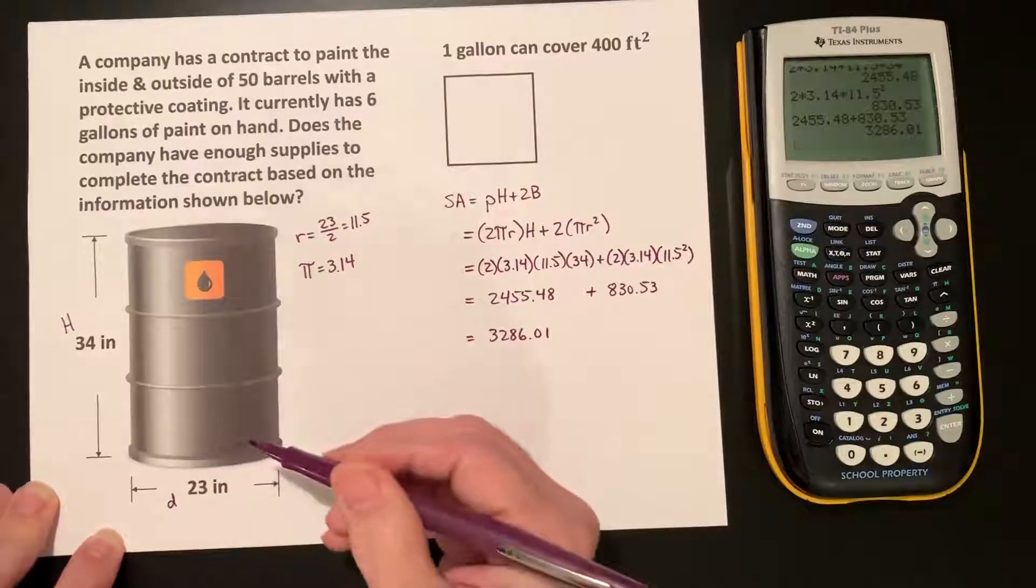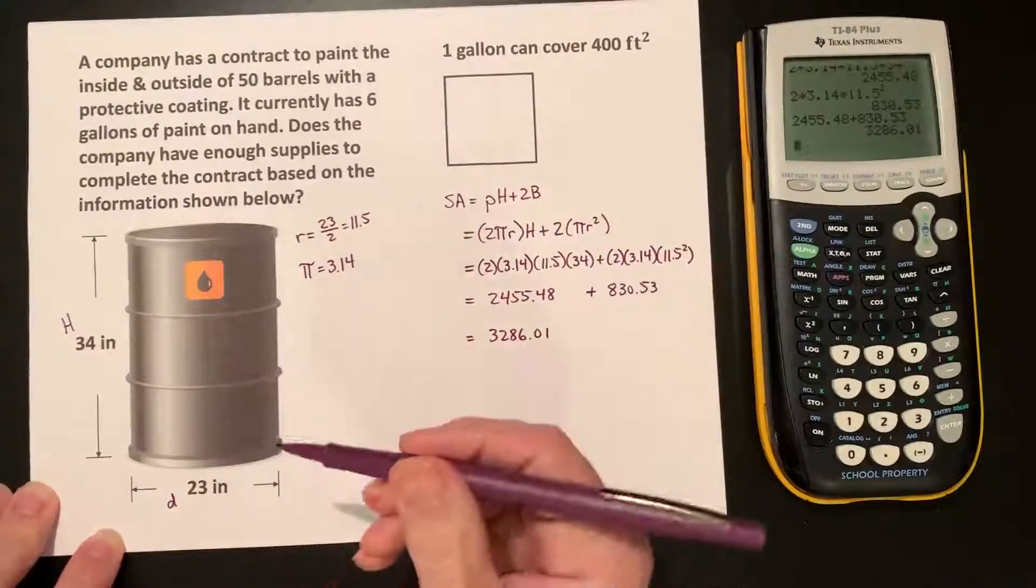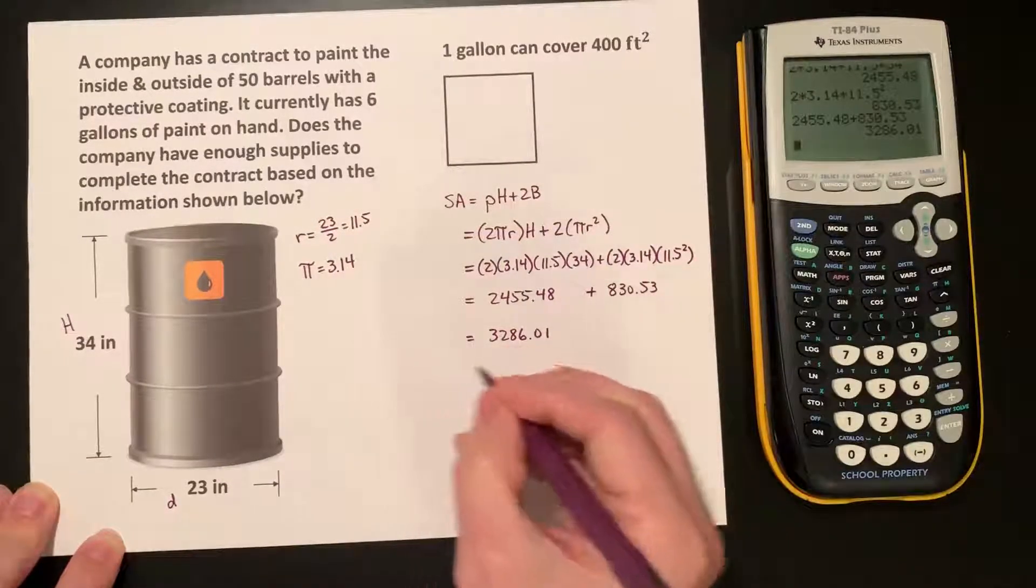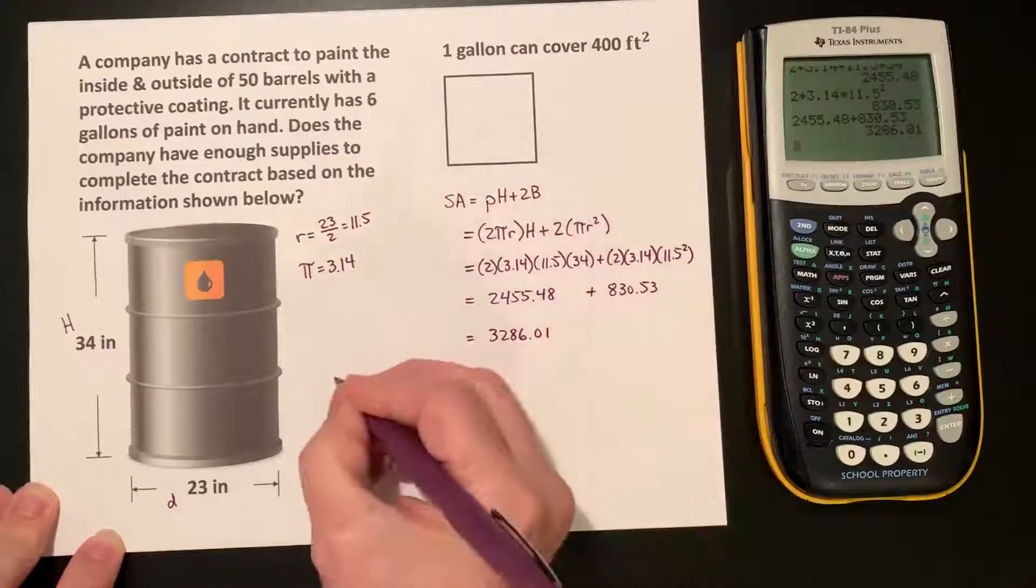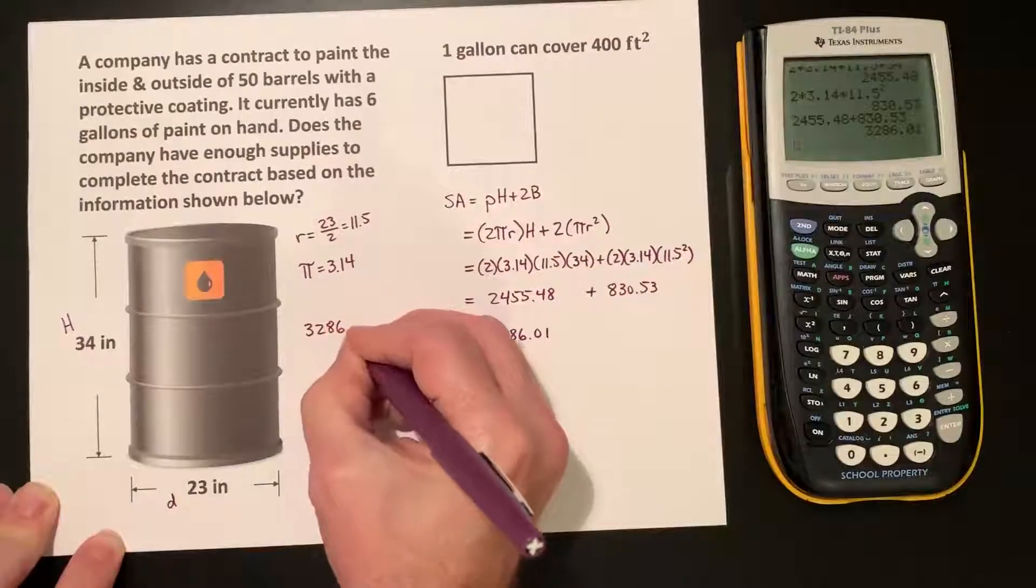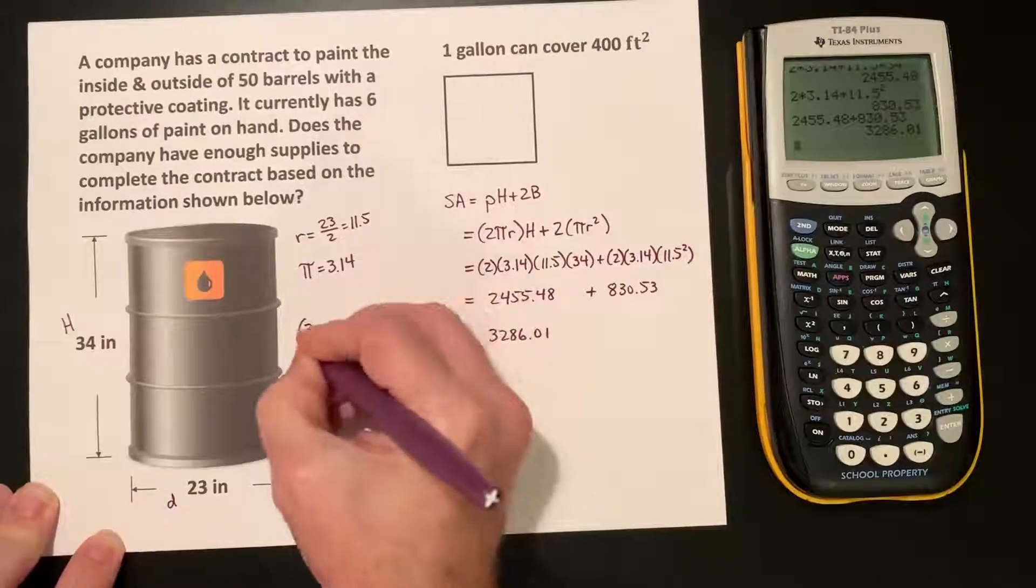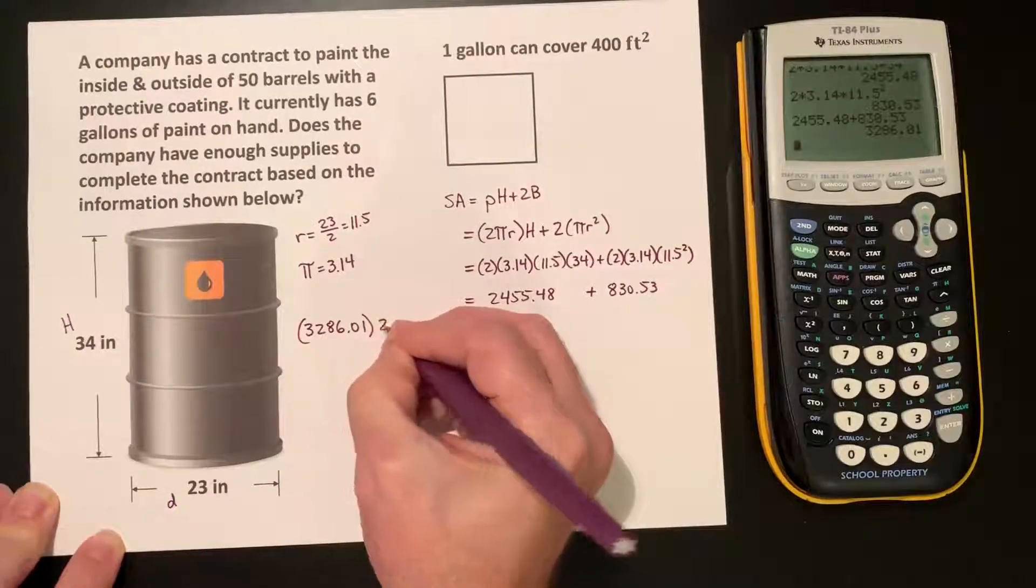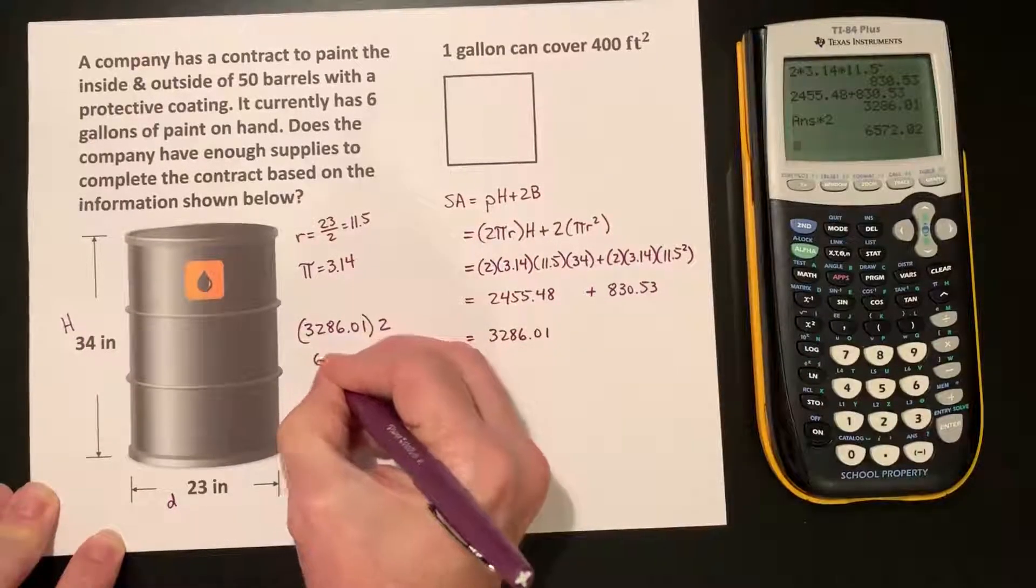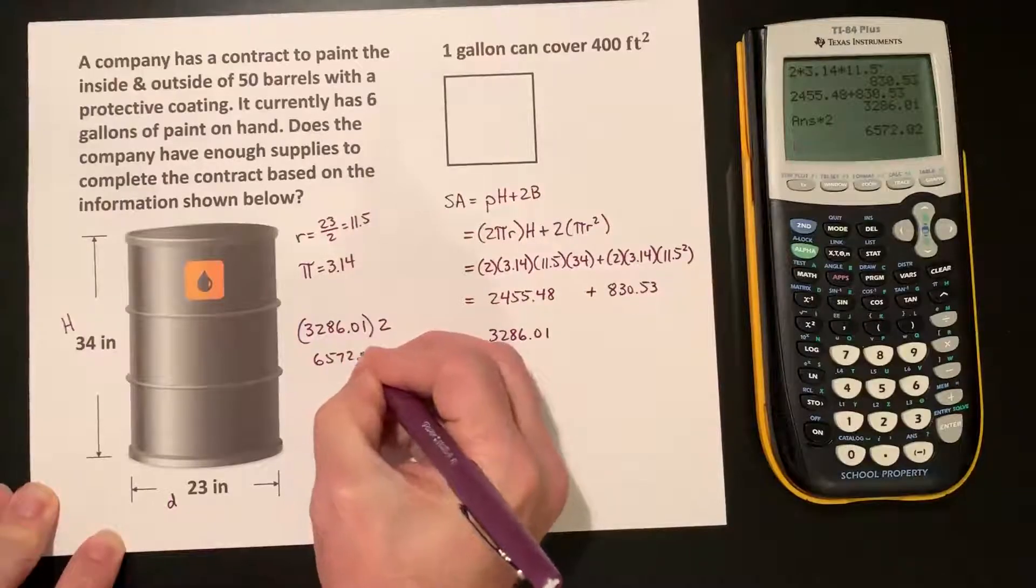Well, that's the surface area of the outside of this, but they have to also paint the inside of the barrels. So, we can essentially just double this, so 3,286.01 times 2 gives us 6,572.02.